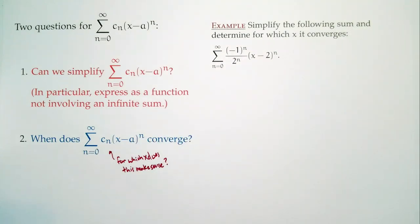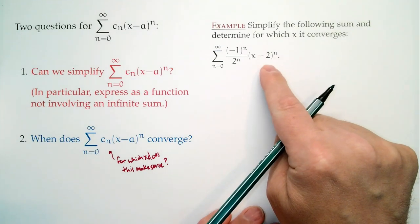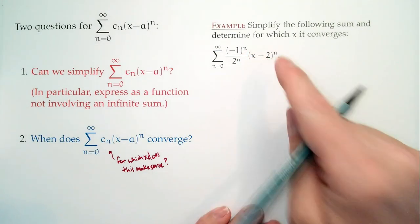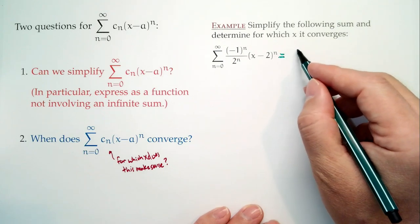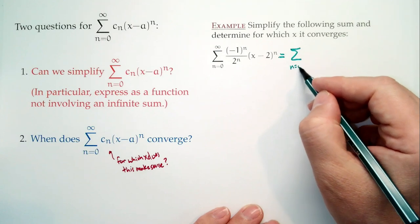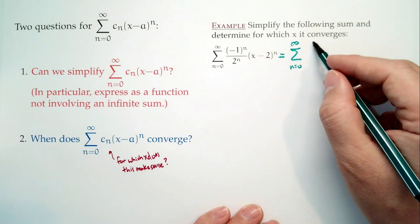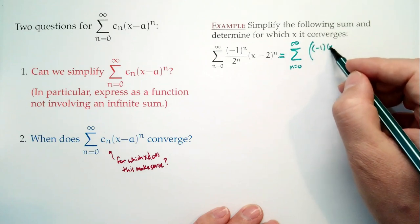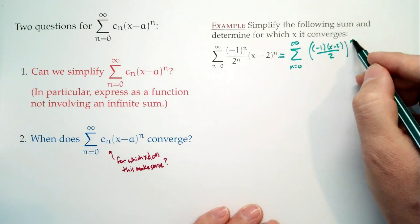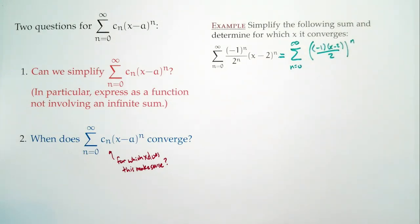Let's do another example: simplify the following sum and determine for which x it converges. We have the sum n equals 0 to infinity of (negative 1) to the n over 2 to the n times (x minus 2) to the n. Notice here that everything is really something to the nth power. So one of the things we can do right away is think of this as the sum n equals 0 to infinity of the quantity [negative 1 times (x minus 2) all over 2] raised to the nth power.